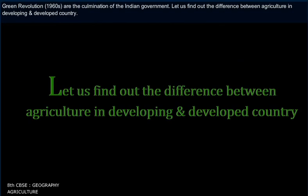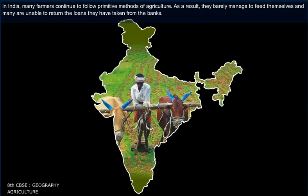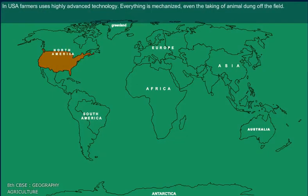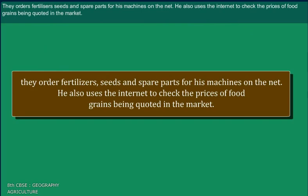Let us find out the difference between agriculture in developing and developed countries. In India, many farmers continue to follow primitive methods of agriculture, and as a result, they barely manage to feed themselves and are often unable to repay bank loans. In the USA, farmers use highly advanced technology; everything is mechanized. They order fertilizers, seeds, and spare parts for machines online, and also use the internet to check food grain prices in the market.